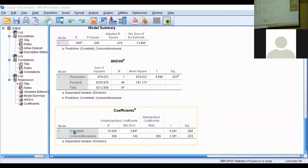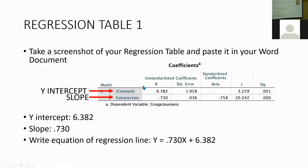The constant operates as the y-intercept. The slope is the second line with the trait variable — this is exactly what you need to look at in your regression table. You want the y-intercept and the slope because you're going to write underneath that regression table your equation of regression line. The slope goes in this location and the y-intercept goes here. So for example: y equals 0.730x — which we get from extraversion — plus 6.382, which is the constant.